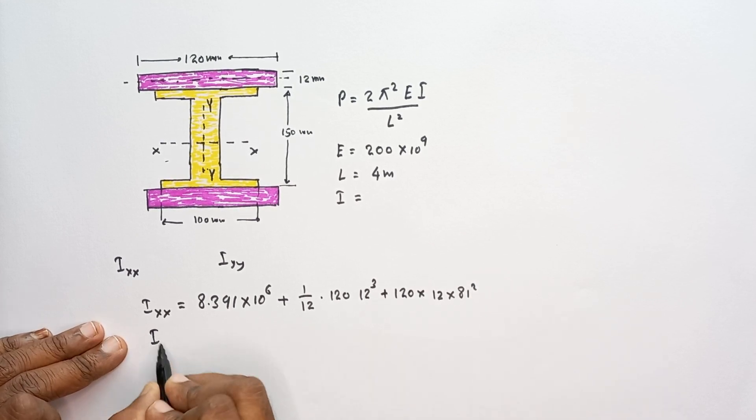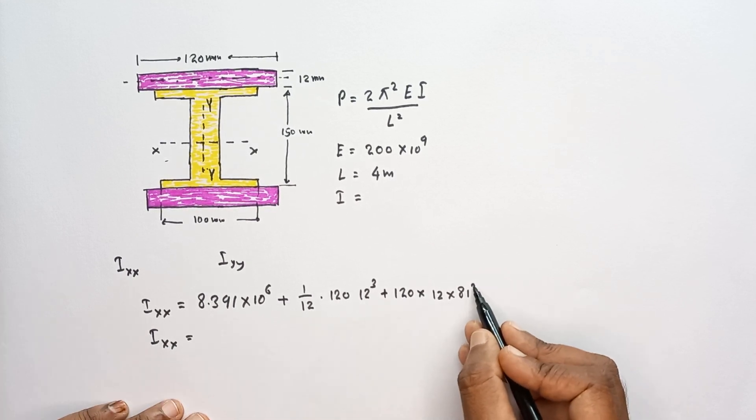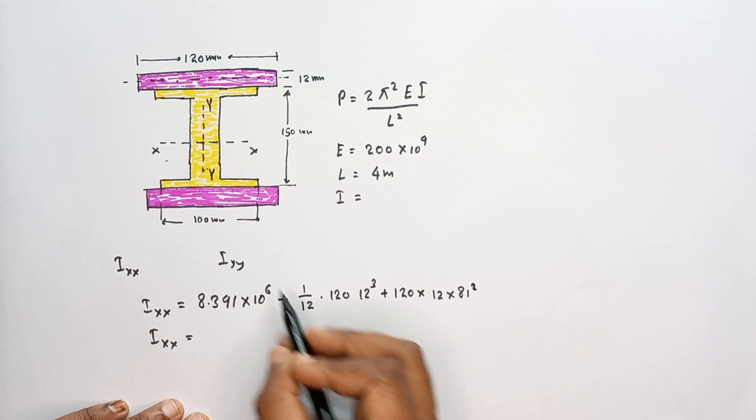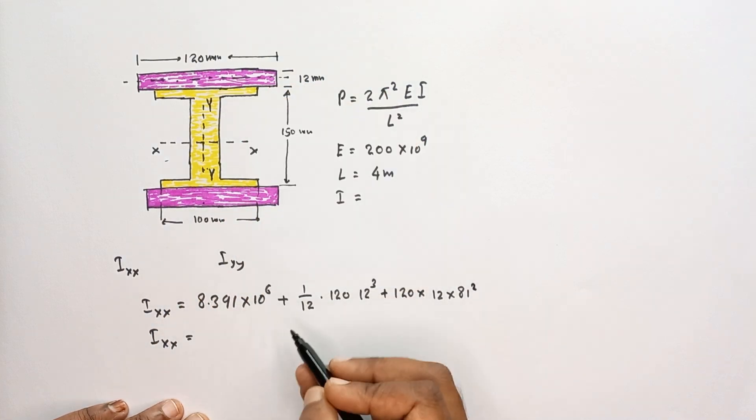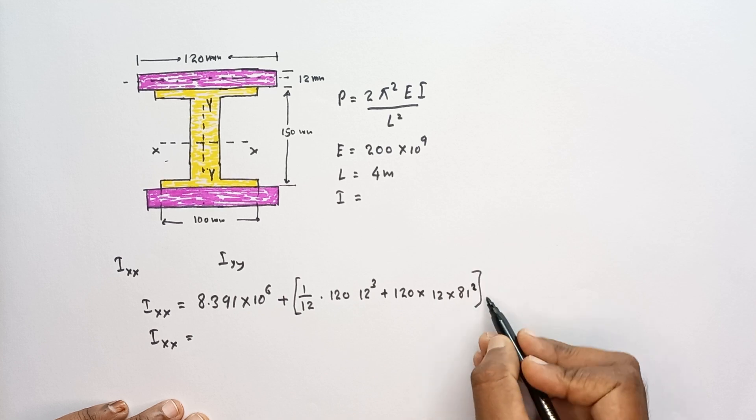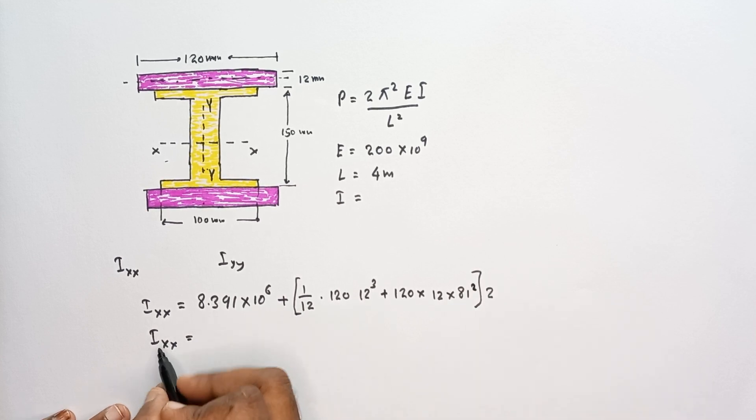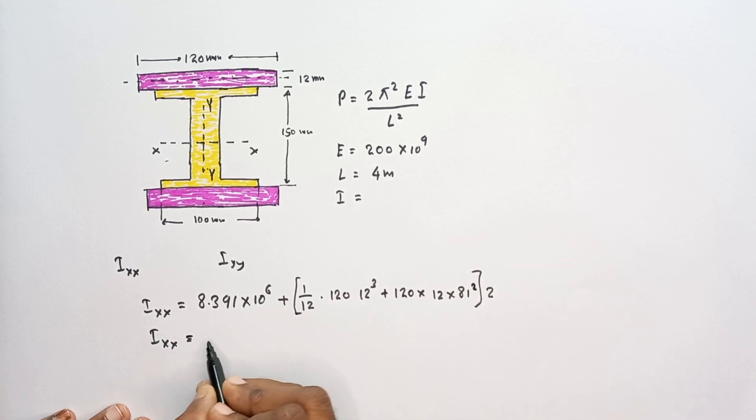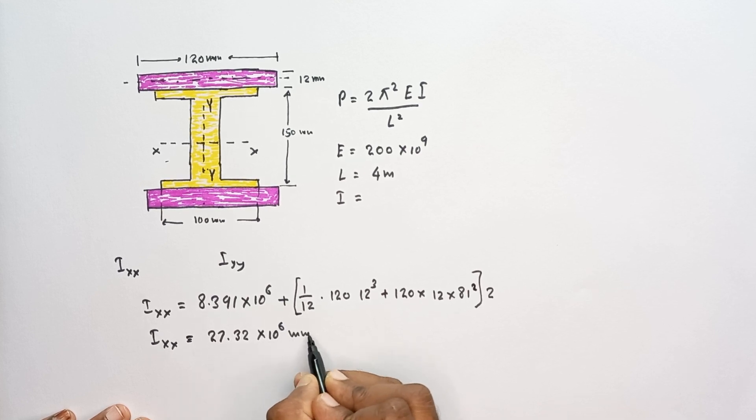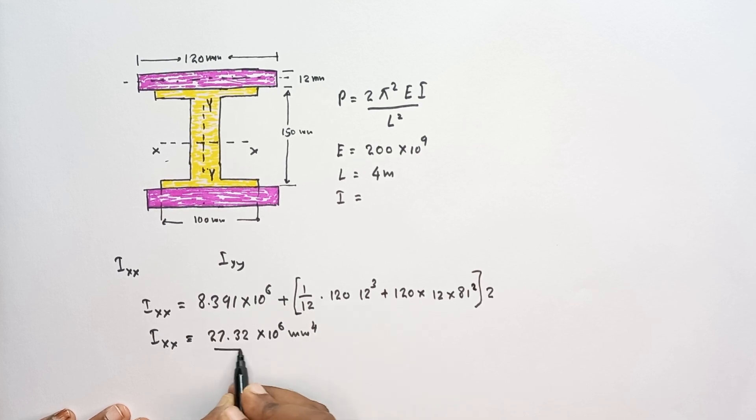Then this will give Ixx, 81 squared. Here we have two similar areas, so I have to multiply by 2. So then this will give Ixx value as 27.32 × 10⁶ millimeter to the fourth. This is Ixx.